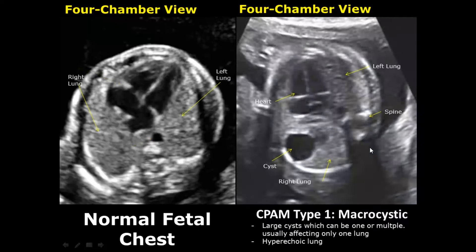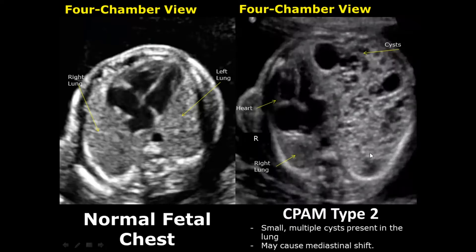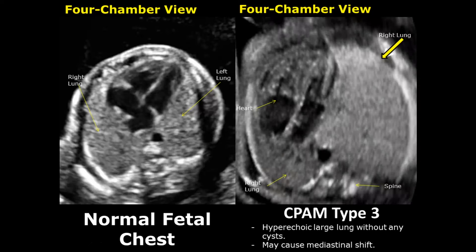CPAM stands for congenital pulmonary airway malformation and has three types based on its appearance. Type 1 is macrocystic, with one or more large cysts; the lung is enlarged and hyperechoic, and it may cause mediastinal shift. In type 2, there are small multiple cysts scattered throughout the enlarged hyperechoic lung. In CPAM type 3, we will see a hyperechoic enlarged lung without any cysts.